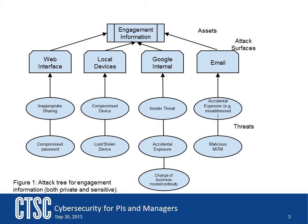For example, in the case of Google internals, threats that might arise are an insider — a Google employee doing something that will expose or corrupt the information — or Google might change its business model or practices. As you identify each surface for the key asset, try to think through all the situations that might cause a problem with it. Also, seek the help of outside experts. This could be department or campus resources.